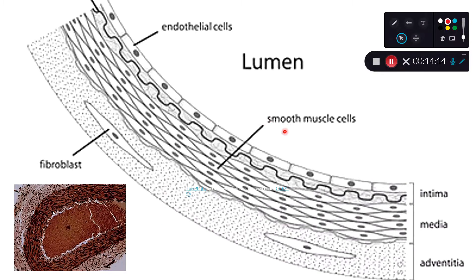Arterioles have this structure with an endothelial cell layer overlying a layer of smooth muscle and on the outside we have this elastic adventitia.